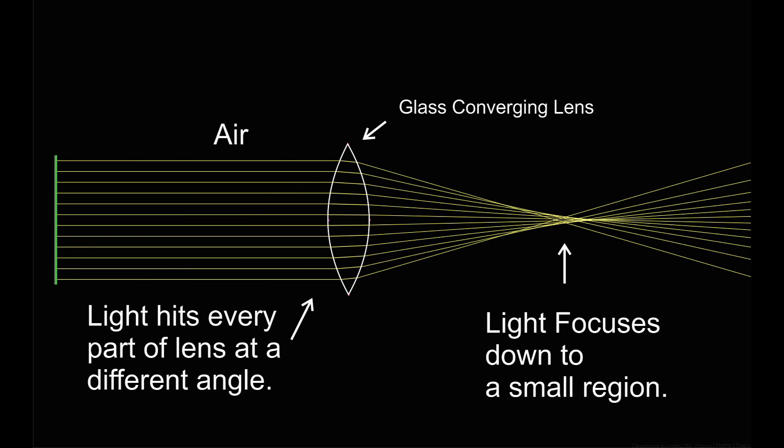A lens is similar to a prism, but each beam of light hits the lens at a slightly different angle, so each beam of light gets bent a different amount when it goes through the lens. The parallel beams of light coming from the left side all cross each other in a narrow region on the other side of the lens.